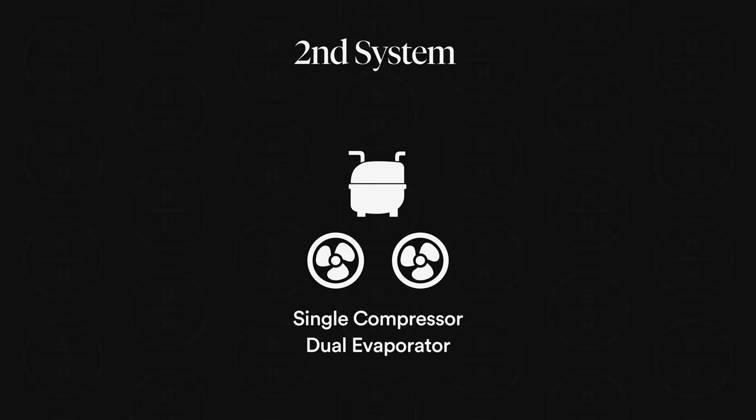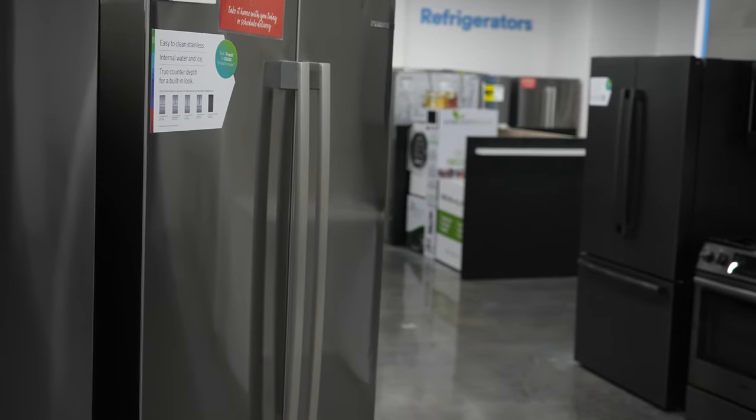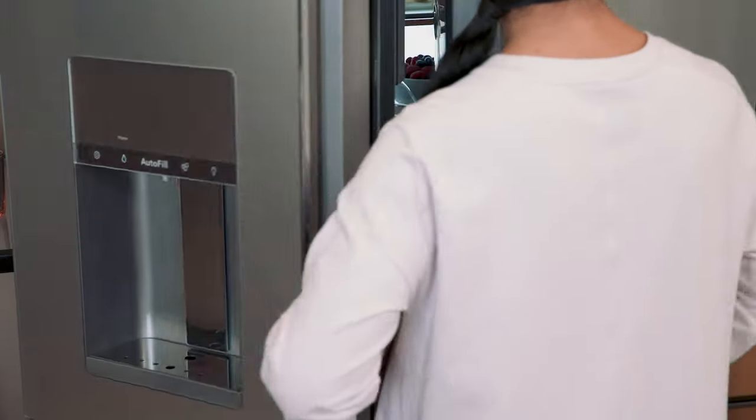The second type is a single compressor, dual evaporator. Both sections have an evaporator with this system. You have a single compressor in the back and a valve that will direct the refrigerant to either the freezer section, the refrigerator section, or both sections if both are calling for it. Because there are more parts involved, it will increase your cost, but it also increases your efficiency. It is definitely more efficient, though you do have more components that could possibly fail down the road.